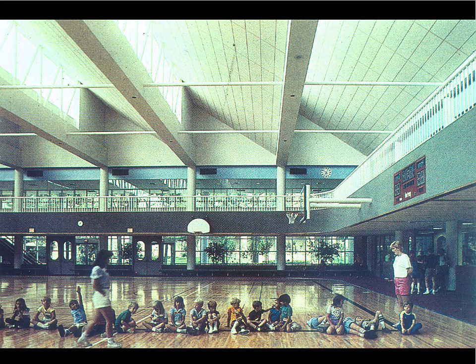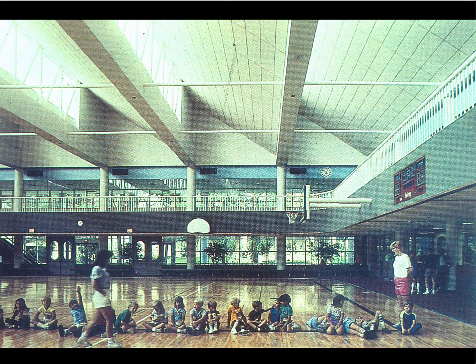There are examples where the task differs significantly from a library or office. In a library or office there's a hypothetical surface representing the tabletop or desktop. But in a gymnasium the task is not a paper task — it's following the flight of a basketball, so the space must be bright throughout its entire volume. You'll notice the height to the top of the glazing is much greater than the spacing between glazing elements, because we want to keep the entire volume of the space beautifully illuminated.